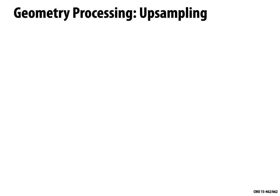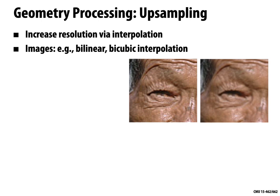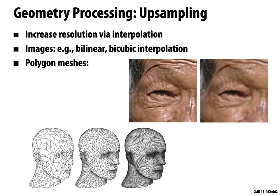Another basic task, just like in signal processing, is upsampling. You have a signal at a certain resolution and want it at a higher resolution. For images, zooming into a texture map is similar — we can use bilinear interpolation or other techniques for higher quality. Likewise, if I have a coarse polygon mesh and want a smooth surface to render, I might want to upsample it. We've already seen subdivision, but there are other techniques like bilateral upsampling.